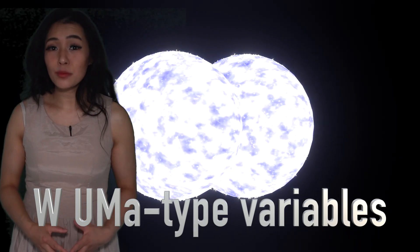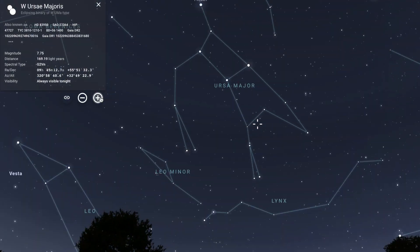Eclipsing contact binaries are known as W Ursa Majoris type variables, named after the binary star system W Ursa Majoris in the northern constellation of Ursa Major.